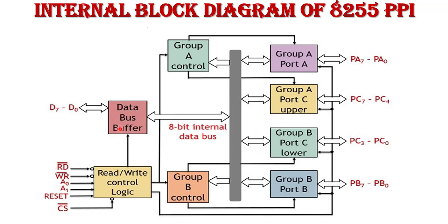The Data Bus Buffer provides communication between the microprocessor and the chip via the 8-bit bidirectional data bus D0 to D7, and it also stores data temporarily. The Read/Write Control Logic has a number of control signals: RD bar, WR bar, A0, A1, Reset, and CS.